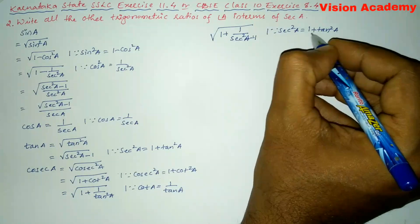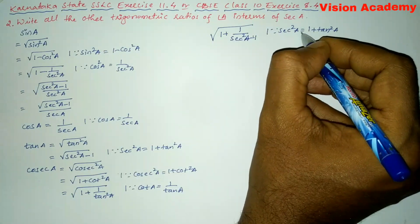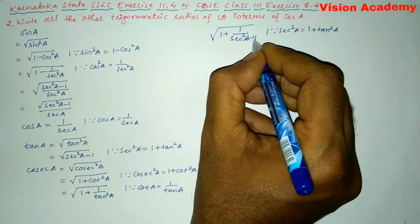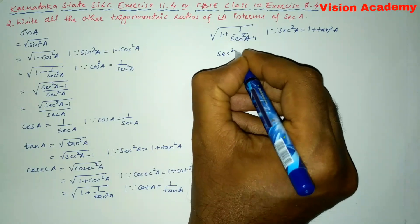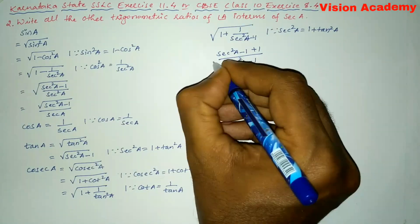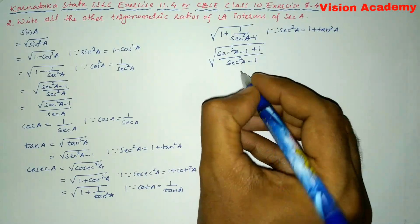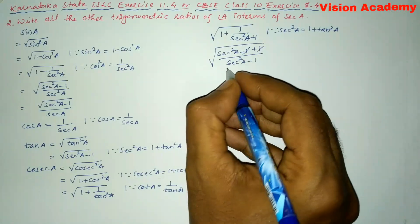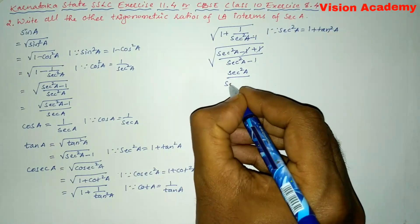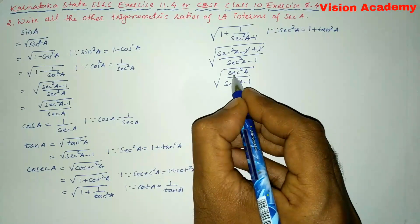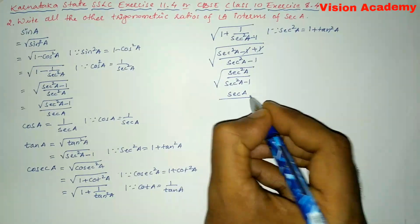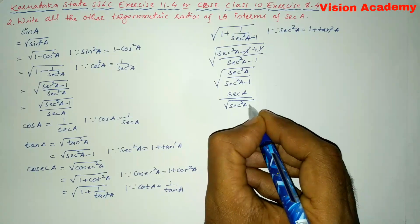So tan²A = sec²A - 1. We take the LCM and multiply (sec²A - 1) with 1, giving us (sec²A - 1 + 1) all divided by (sec²A - 1) under the square root. The +1 and -1 cancel, leaving sec²A divided by (sec²A - 1) under the square root. Taking sec²A out of the square root gives sec A, so cosec A = sec A divided by square root of (sec²A - 1).